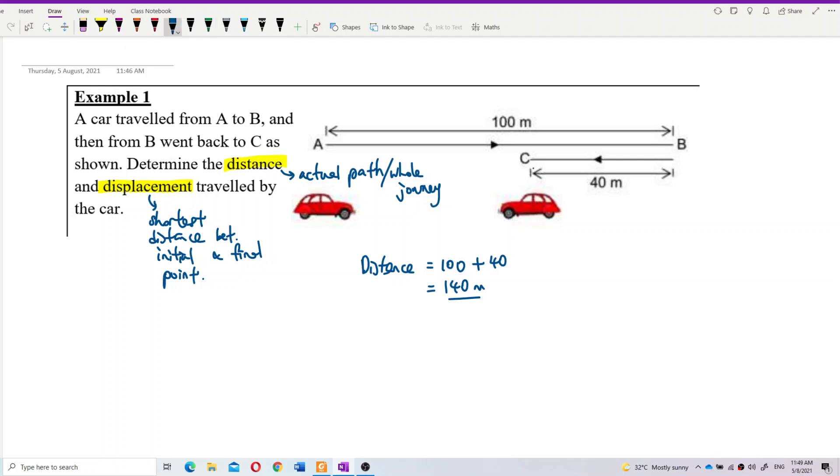Whereas the displacement is the shortest distance between the initial and final point. This is important - between initial and final. What is the initial point? The initial point is definitely A. And the final point is C.